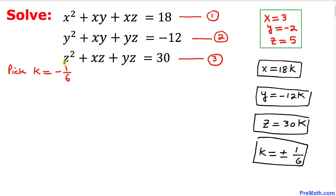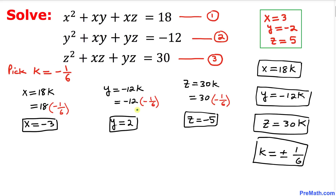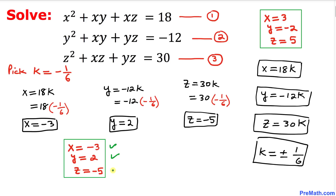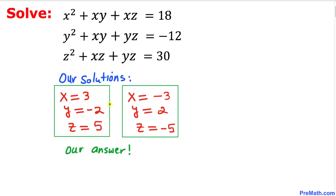Taking k equal to negative 1 over 6, we get x equals negative 3, y equals 2, and z equals negative 5. So our two sets of solutions are (x, y, z) equals (3, negative 2, 5) and (negative 3, 2, negative 5). Thanks for watching, and please don't forget to subscribe to my channel for more exciting videos.